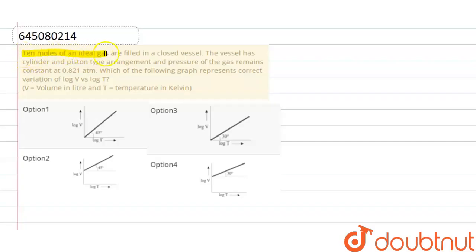Ten moles of an ideal gas are filled in a closed vessel. The vessel has cylinder and piston type arrangement, and pressure of the gas remains constant at 0.821 atmosphere. Which of the following graph represents variation of log V versus log T, where V is volume and T is temperature?